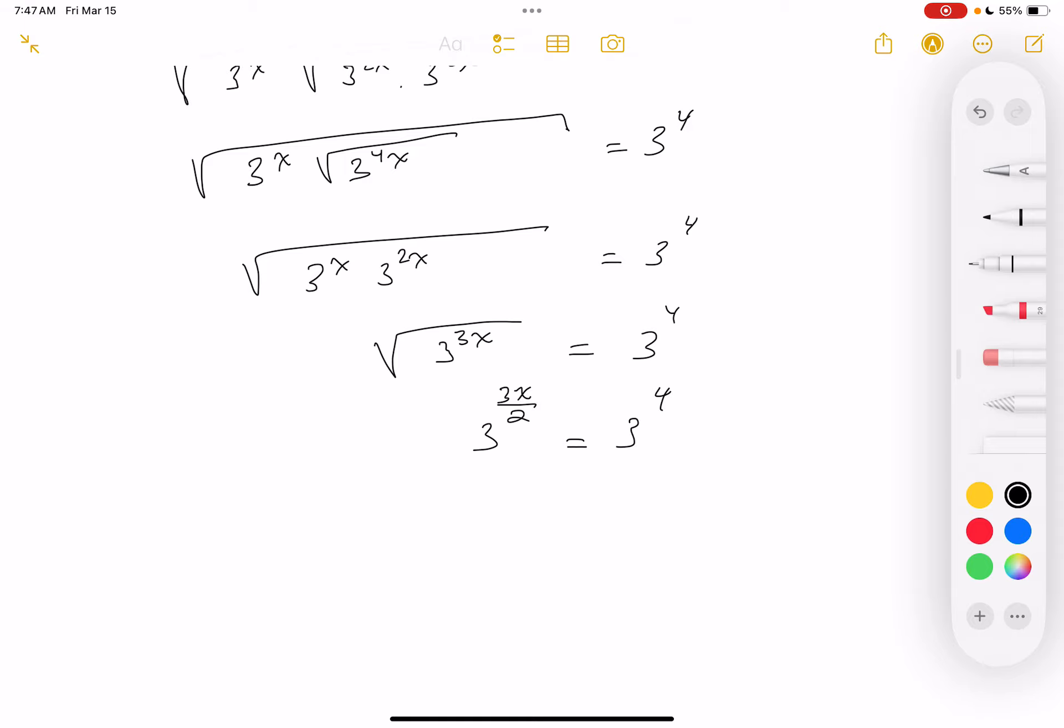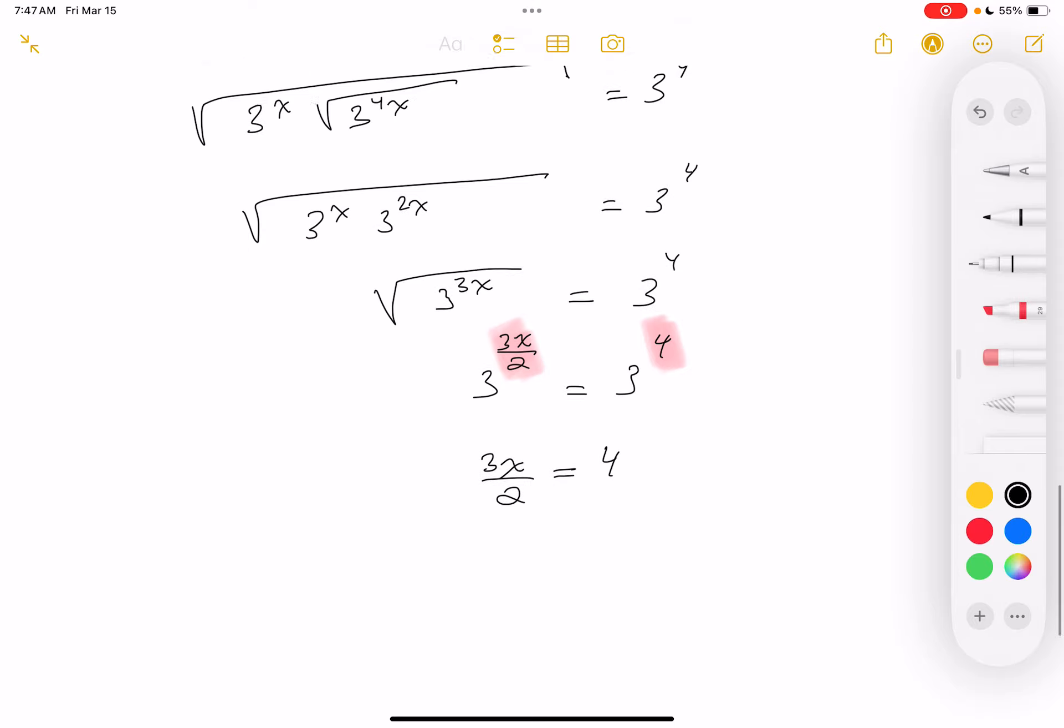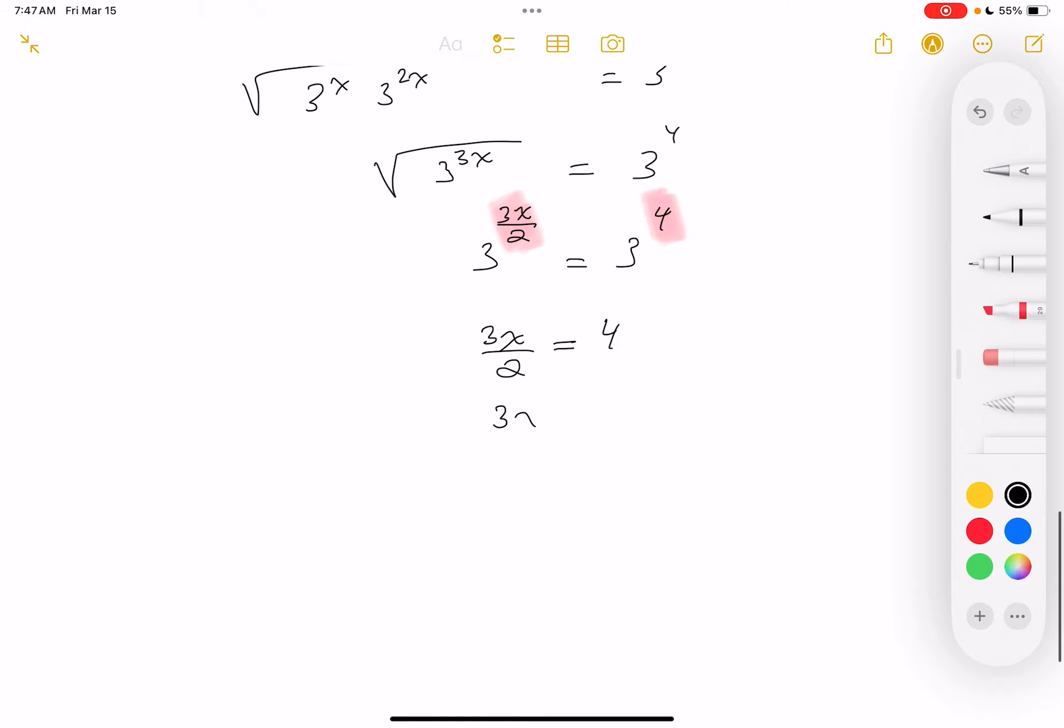What do I know about this? The exponents have got to be equal. So 3x over 2 equals 4. Multiply both sides by 2, you get 3x equals 8. Then divide both sides by 3 and you get 8 thirds, and we are done. Thank you.